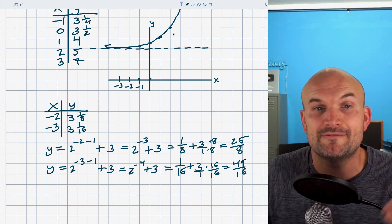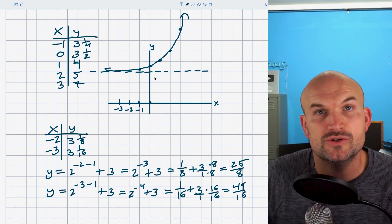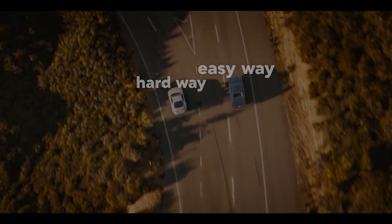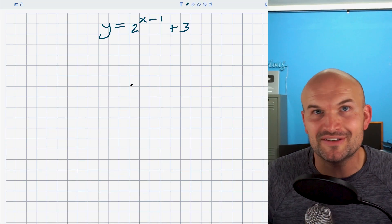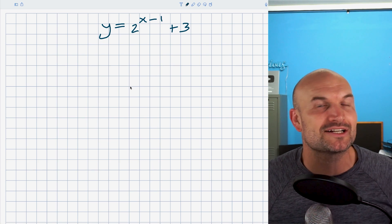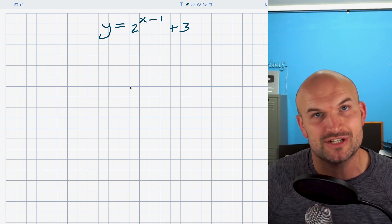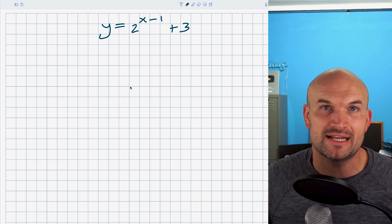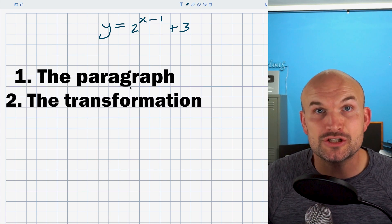This was a very intuitive way to understand the graphing method using a table. But now I want to show you a quicker, faster, easier way to not only understand exponential equations, but also graph them. If we ever get stuck or confused, we can always revert back to the table method — remember that because it's very helpful to check your understanding or verify data points. But if we want a quick way to understand what the graph looks like, it's important to know two things: one, the parent graph, and two, the transformations.